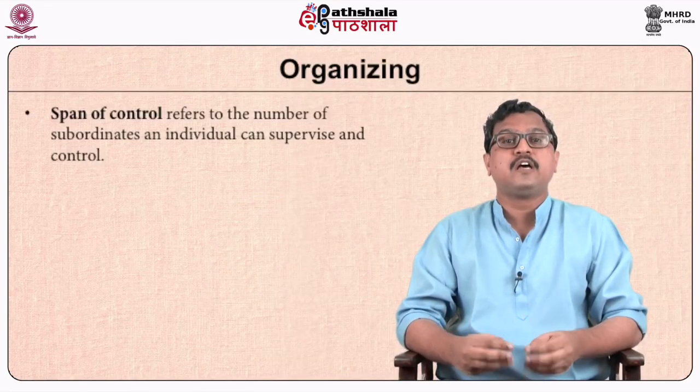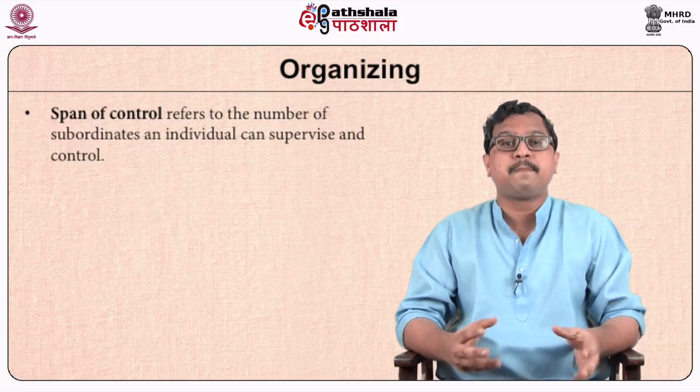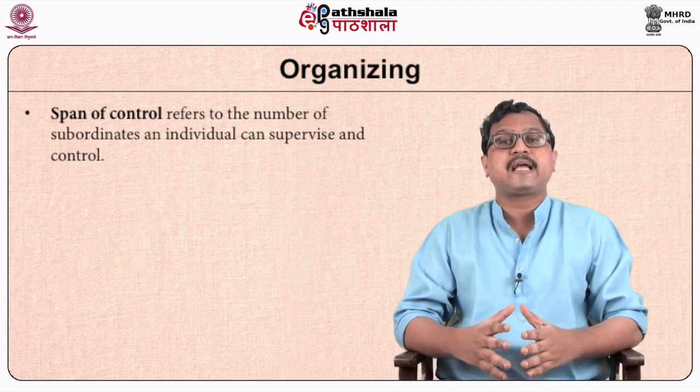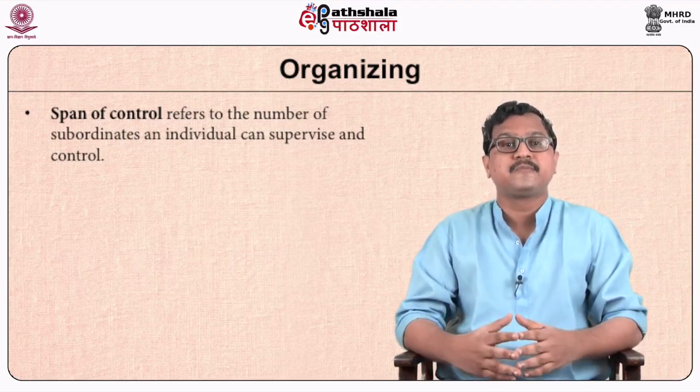Span of control refers to the number of subordinates an individual can supervise and control. Experts recommend that no supervisor can control more than five or six individuals without a decline in quality. Hence, every administrator will mostly handle five to six personnel at any given point of time.